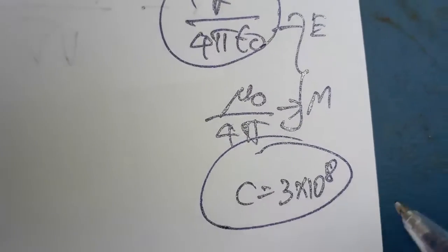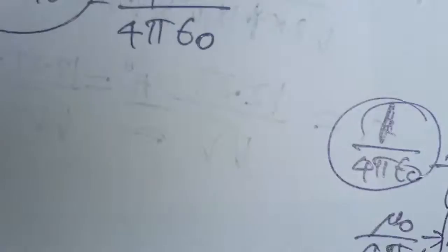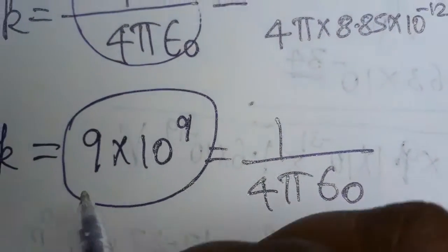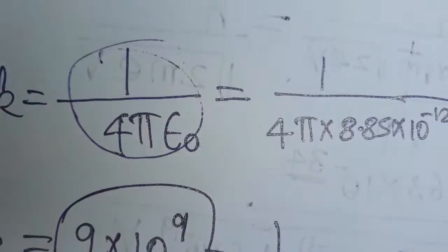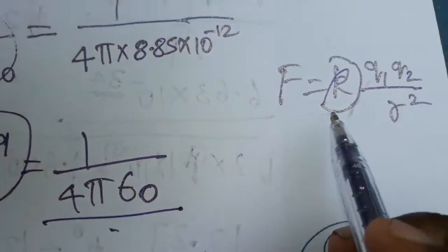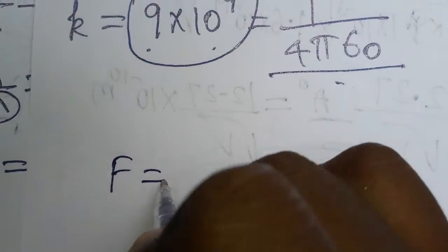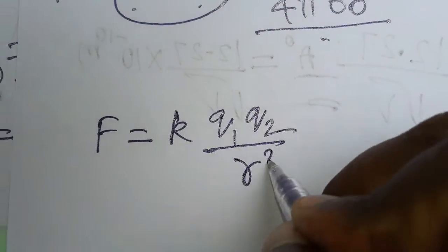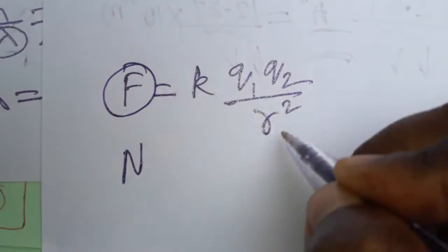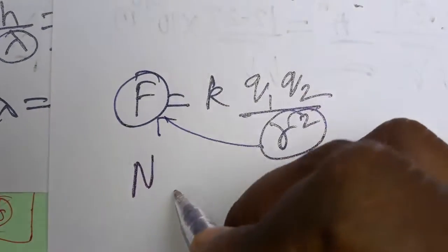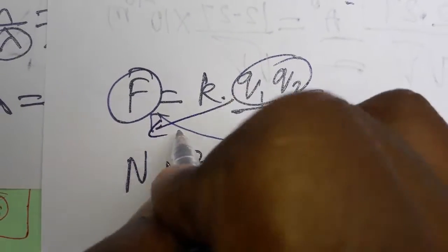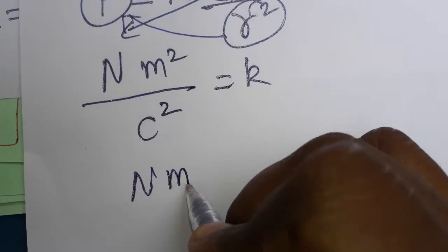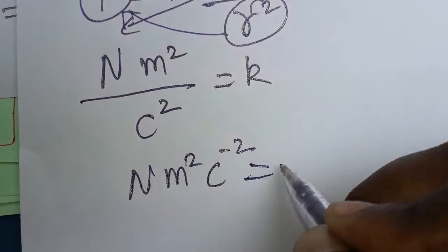When we multiply those two we get 3 into 10 power 8 — I have shown that in another video. Now, what is the unit of 1 divided by 4 pi epsilon naught? From F equals k times q1 q2 divided by r squared, we rearrange: k equals F times r squared divided by q1 q2, giving units of newton meter squared per coulomb squared.